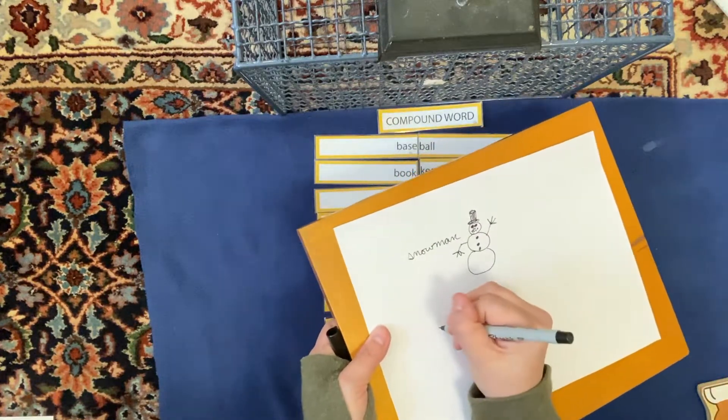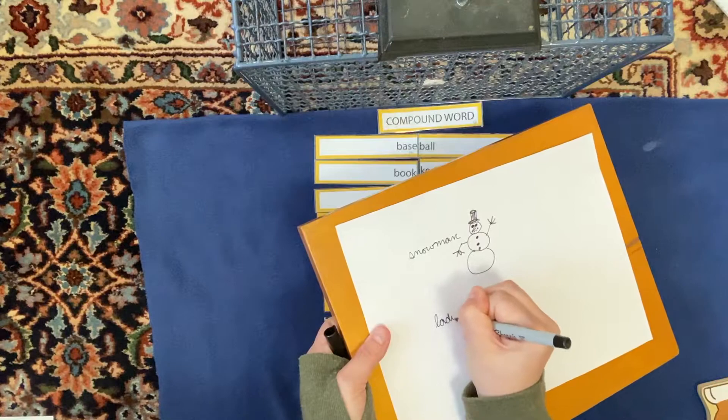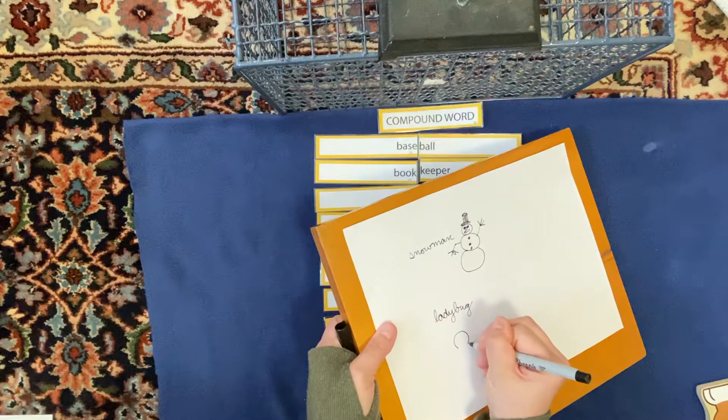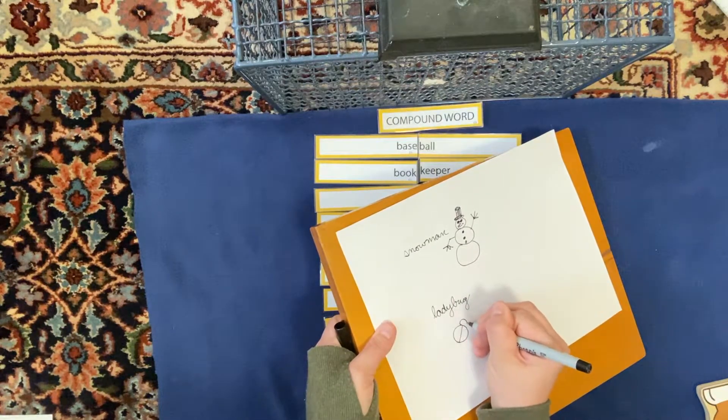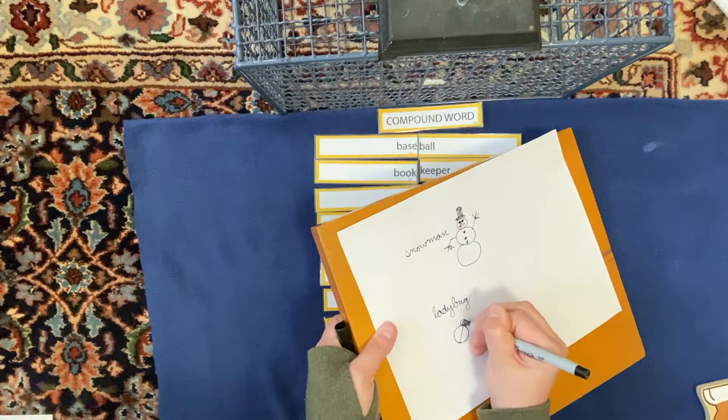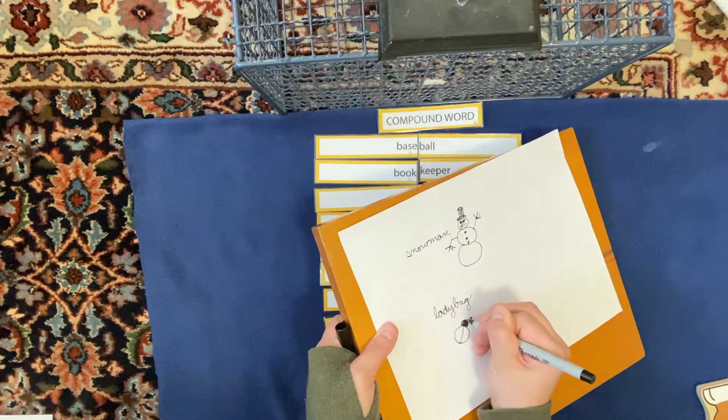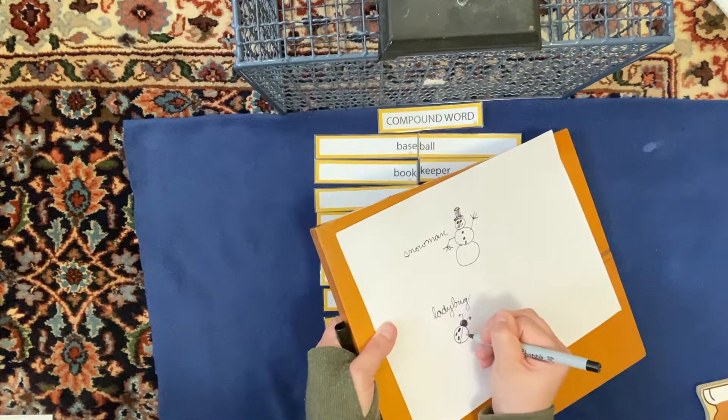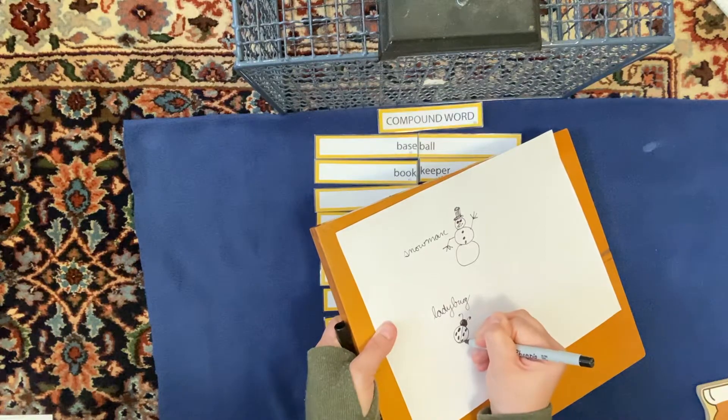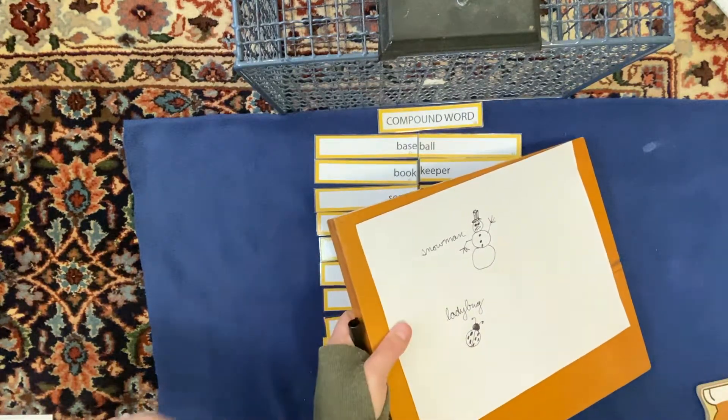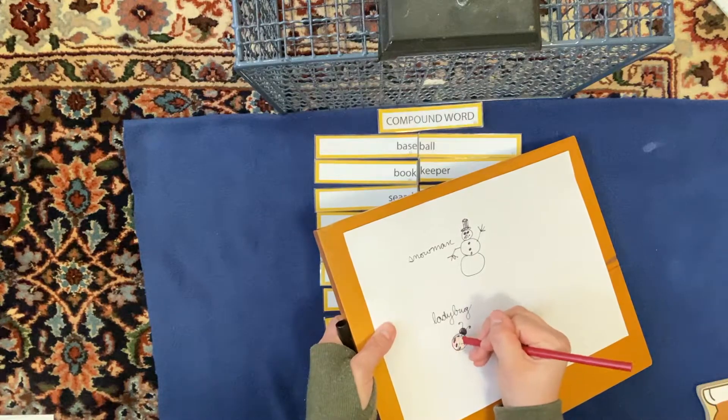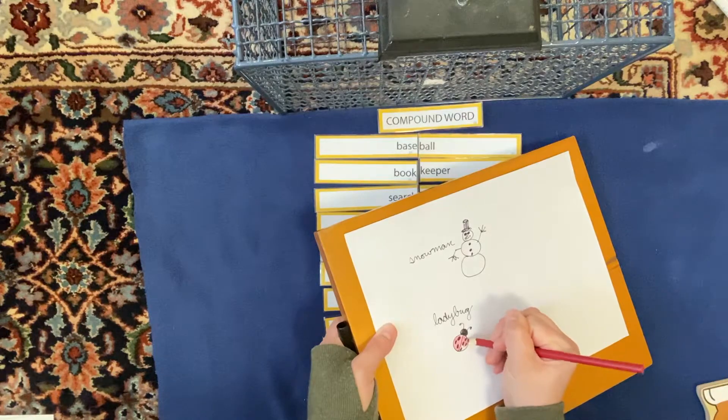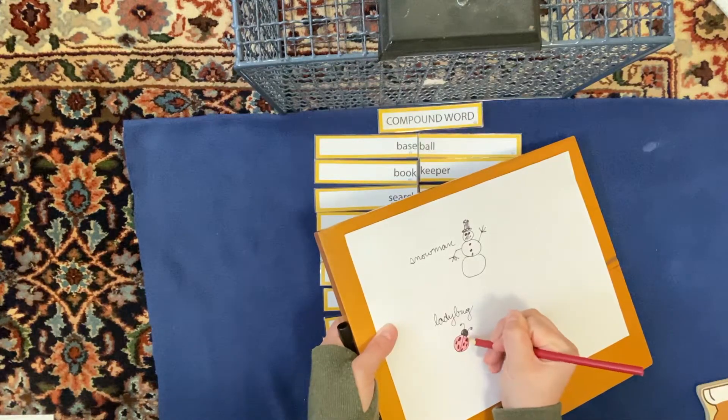I can do the same thing with ladybug. Ladybug kind of has this and then a head, right? The black head. It's got little antennas. And then it's got black spots on it, right? Like that. I even have a red pencil. I can color it in. There we go.